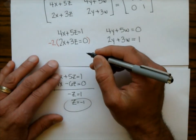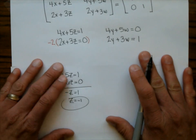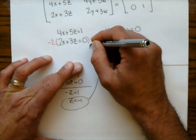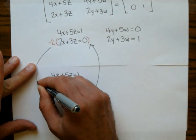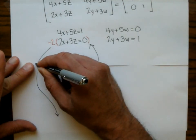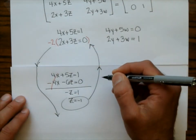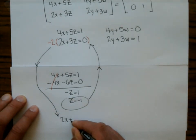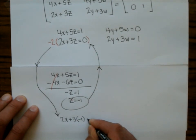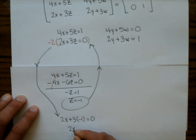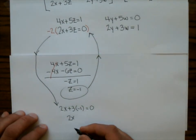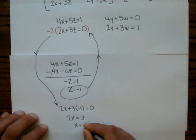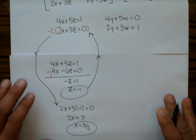Now I plug z = −1 into the bottom equation: 2x + 3(−1) = 0. So 2x = 3, and x = 3/2.